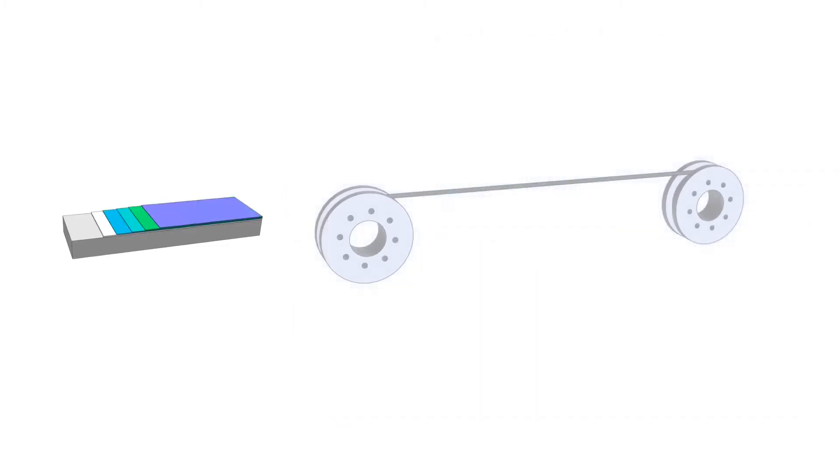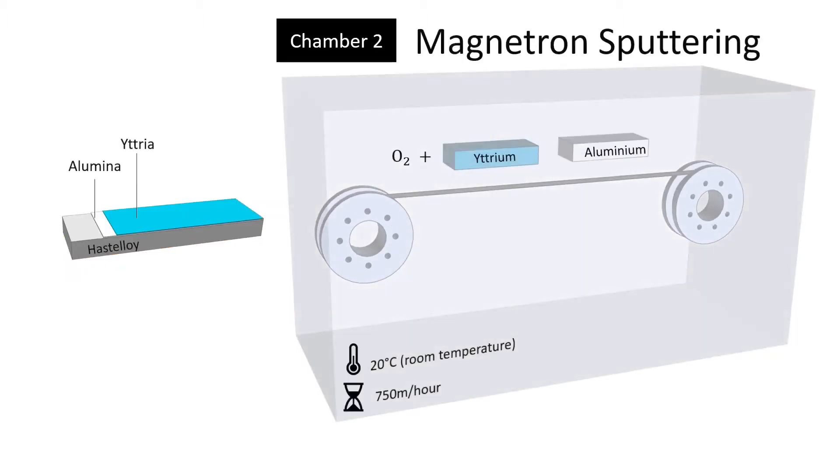Several layers are then deposited to form the buffer layers needed to achieve an epitaxial growth of the high-temperature superconducting film. The alumina is the first layer and it is sputtered usually in the same chamber as the next layer, the yttrium.